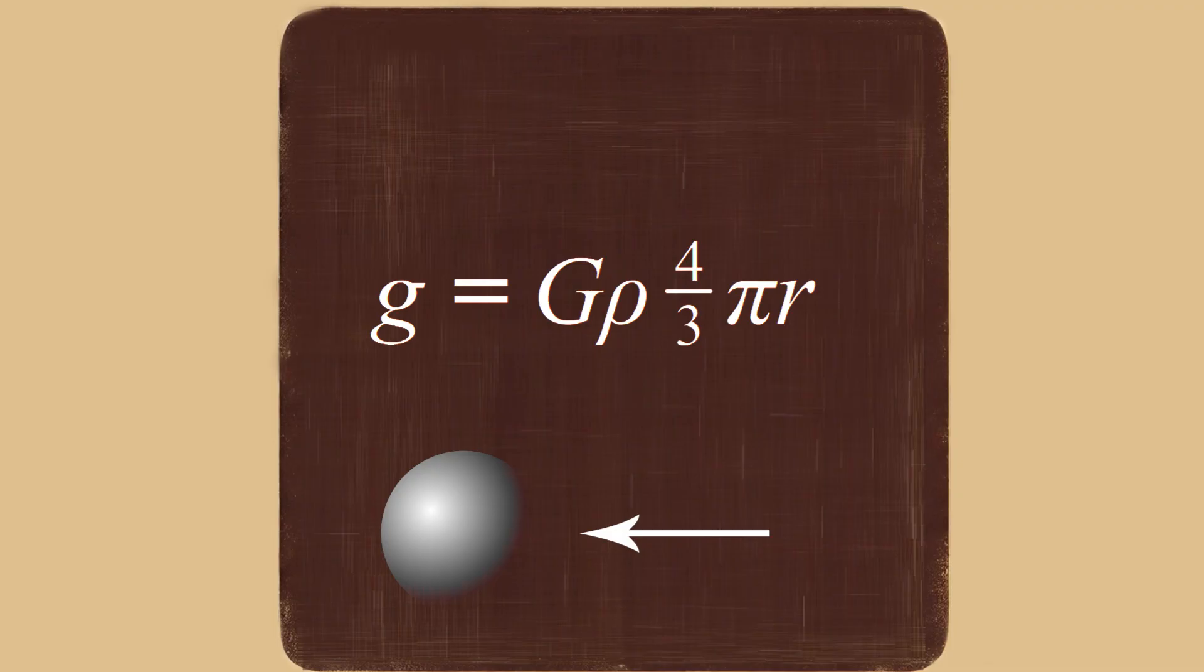This is using density, and it's the same thing. We can use the density of Earth, something like 5,500 kilograms per cubic meter, and it's going to equal 9.8 meters per second squared.